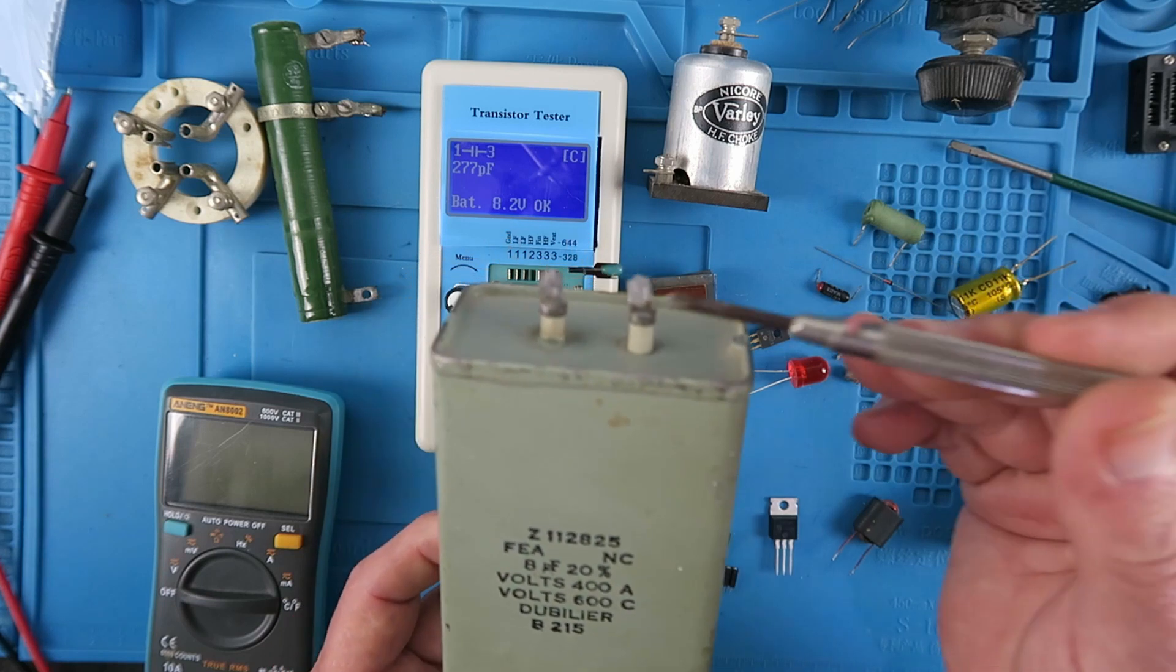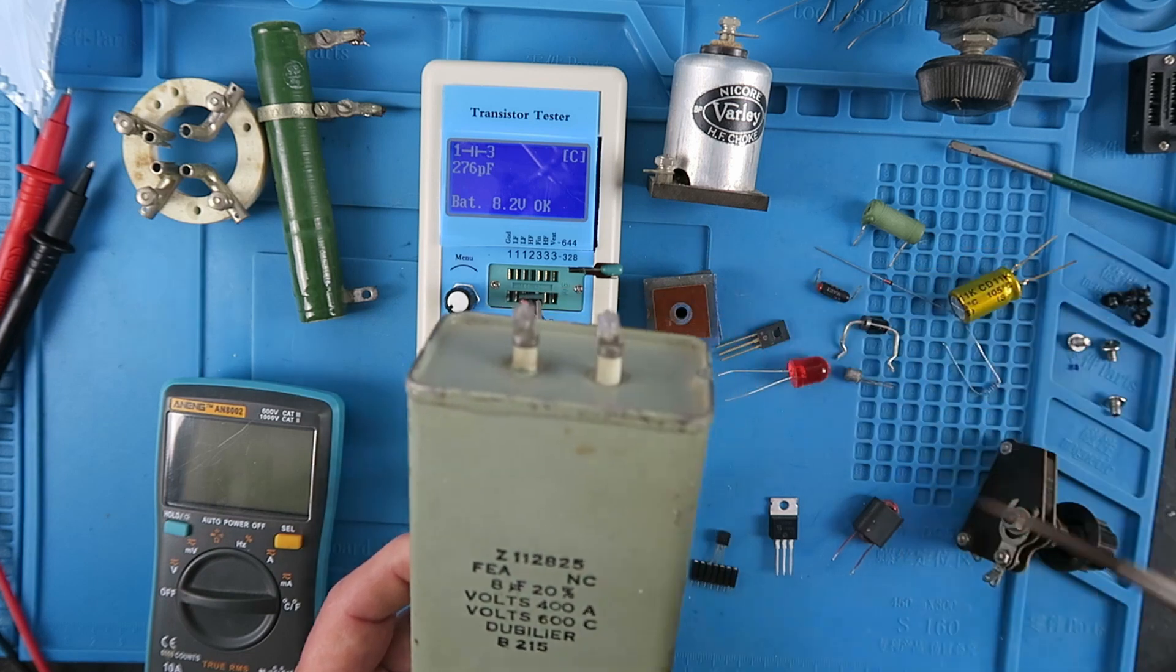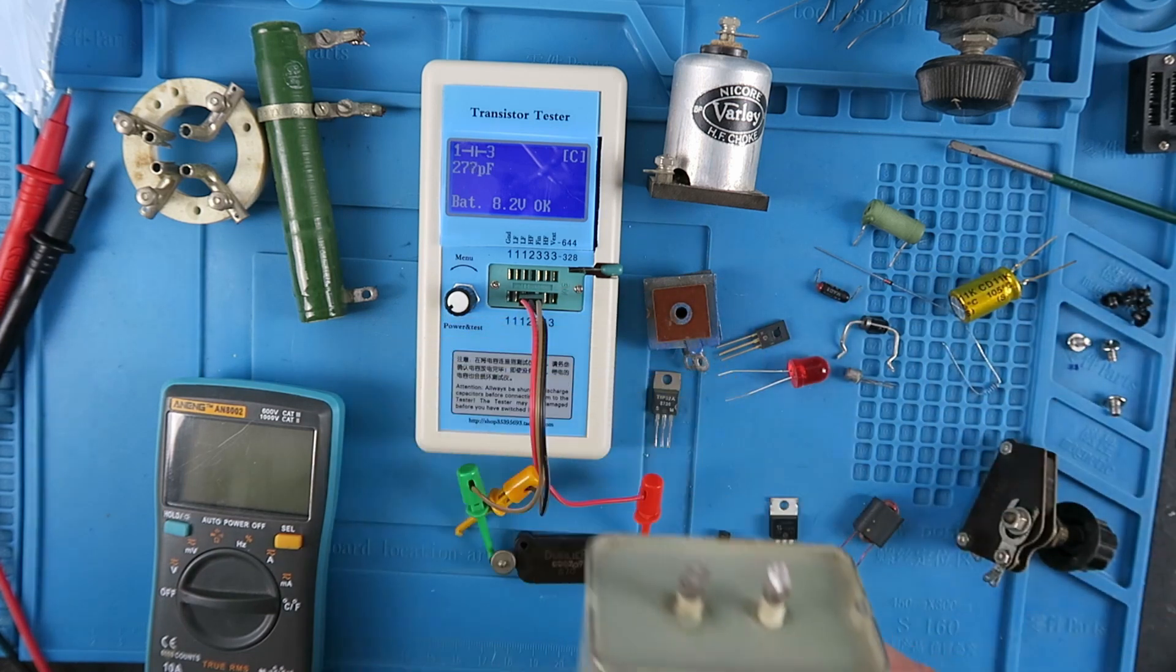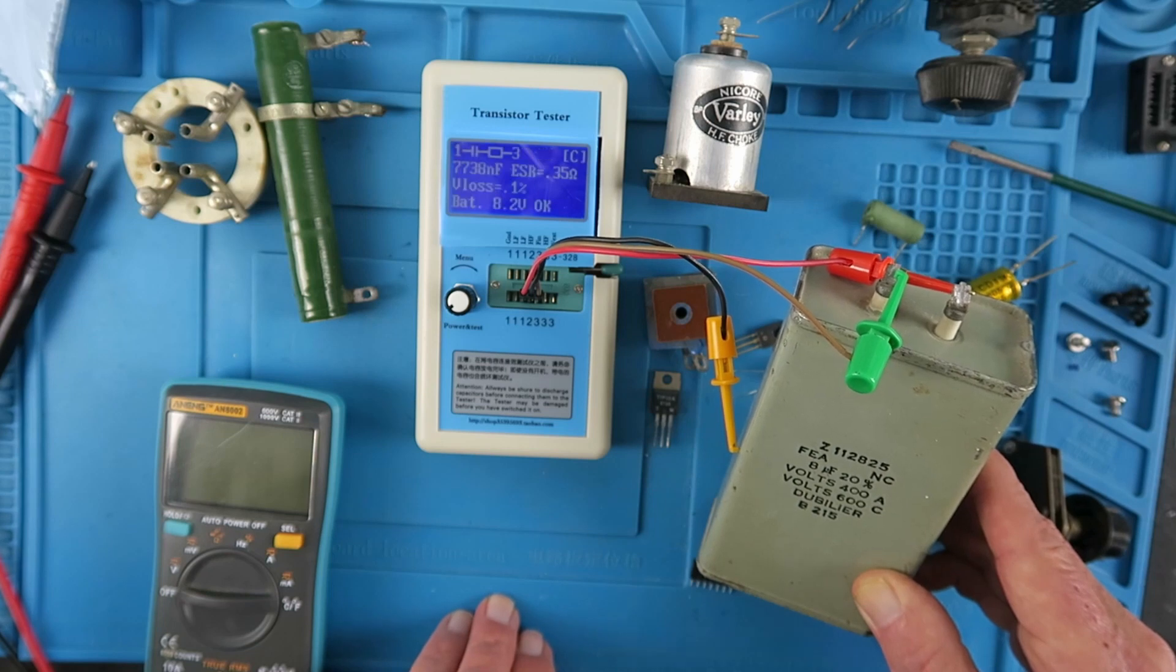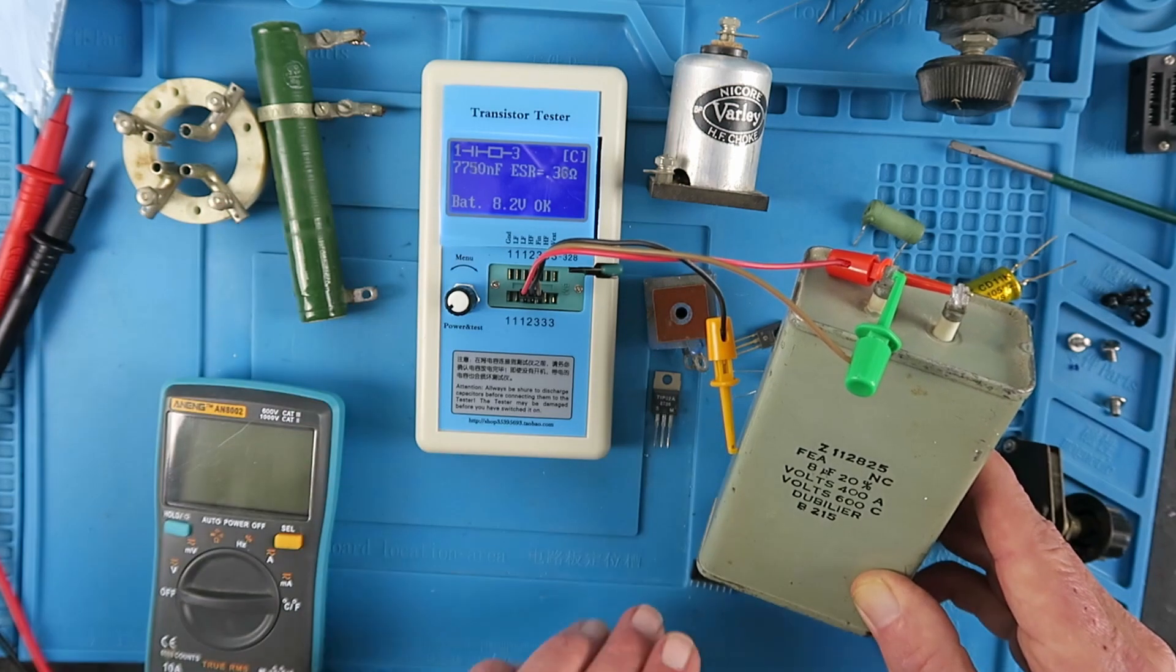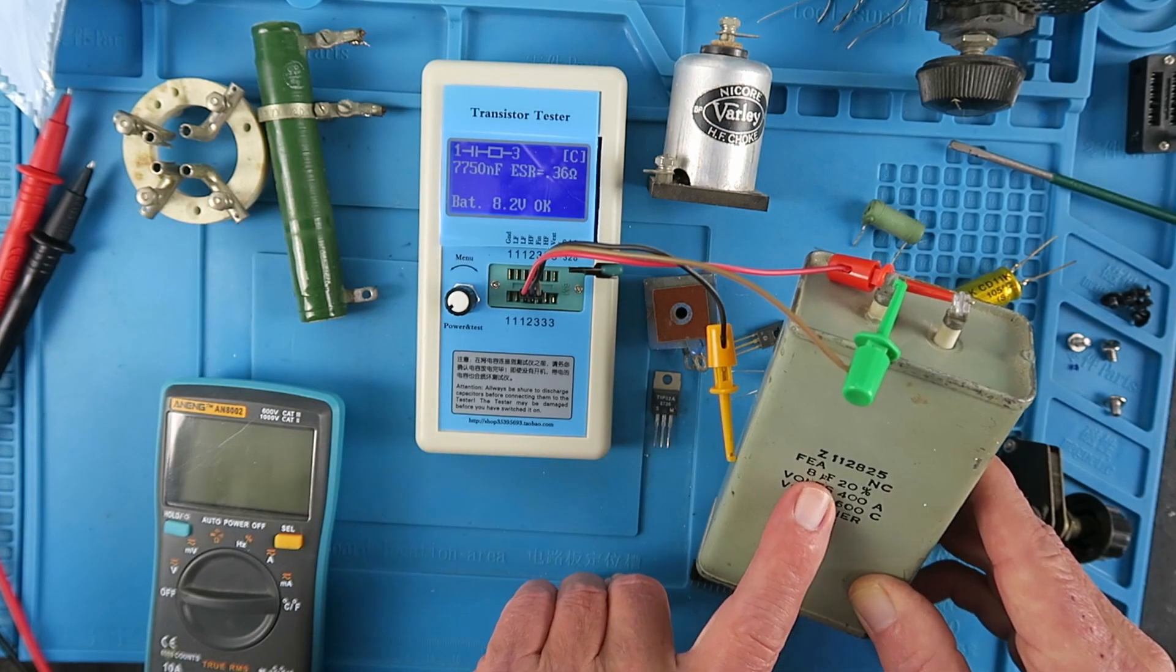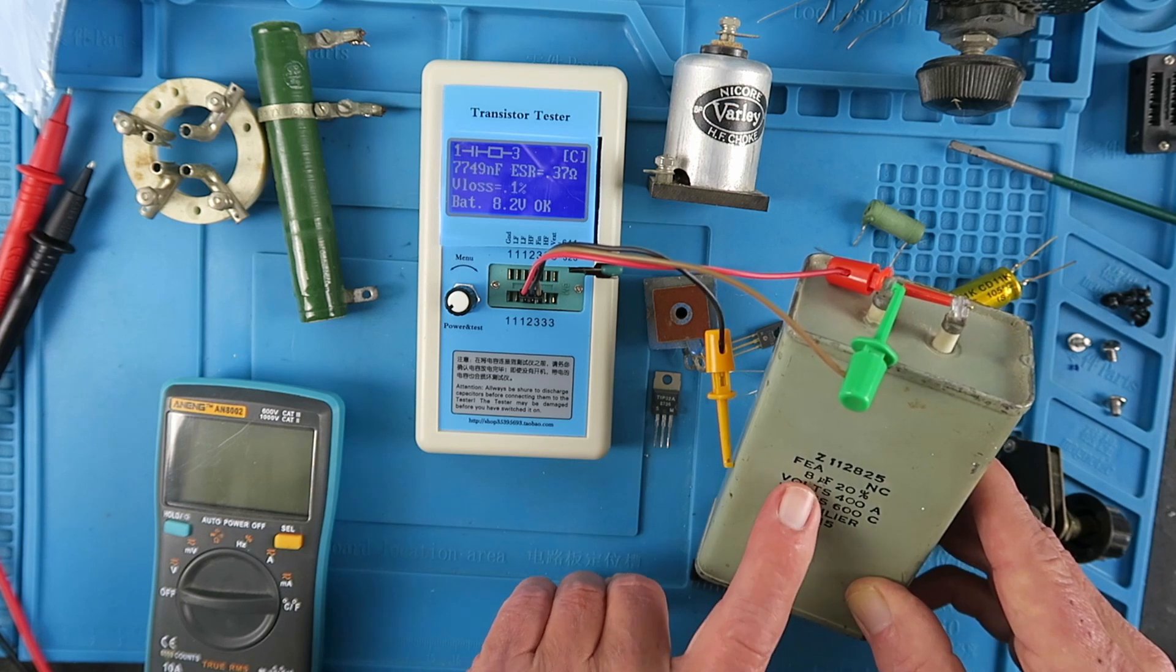We can short it out. Let's see what it measures. 7,748 nanofarads. So, as near as dammit, 8 microfarads. And an ESR of 0.37. Even after decades, this is still a valid capacitor.